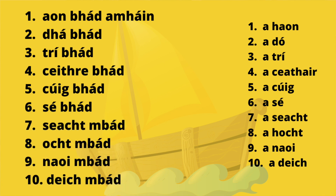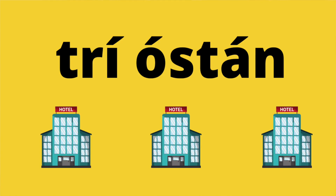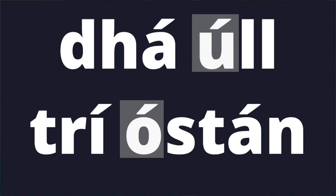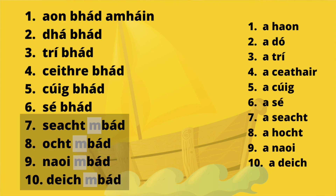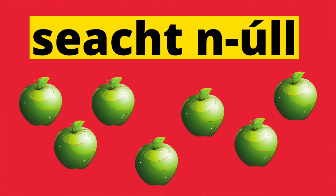If the noun starts with a vowel, it would not undergo any lenition between one and six. So for example, dhá úll is two apples, and trí óstán is three hotels — because the 'u' and the 'o' are vowels. Between seven and ten, as I said, eclipse happens if it's a consonant, and the same if it begins with a vowel — vowels are also eclipsed between seven and ten. So for example it would be seacht núll — seven apples.